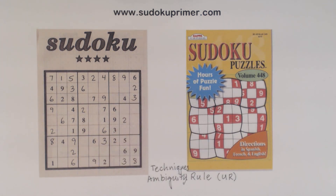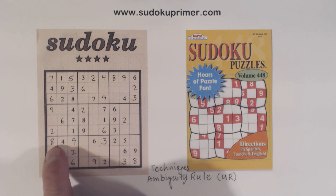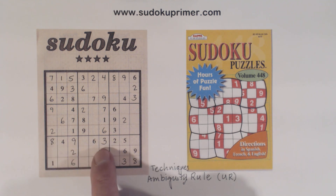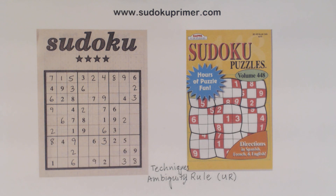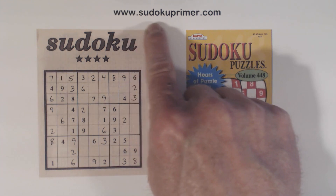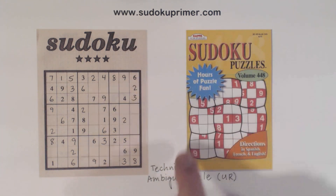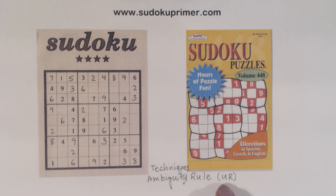We don't know where the 5s go here, but because of the unique rectangles, we are able to determine that that's an 8 and that's a 3. I hope this video has helped you understand unique rectangles better. If you're still fuzzy on them, go to SudokuPrimer.com, go to Techniques, and look up Ambiguity Rule or Unique Rectangles. Thanks for watching — I'll see you again next time.